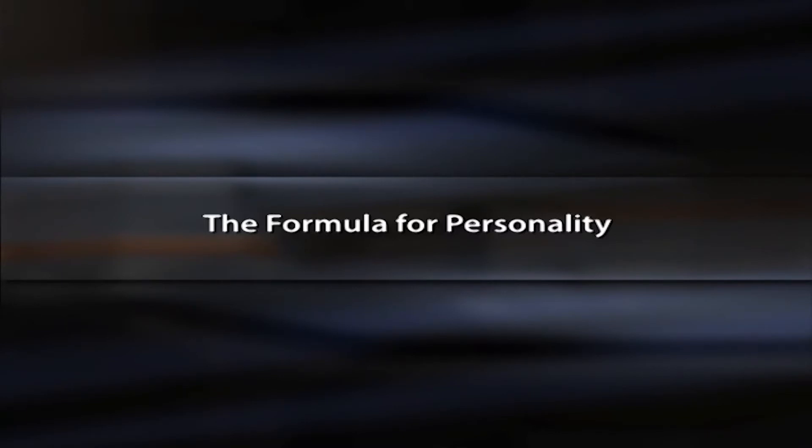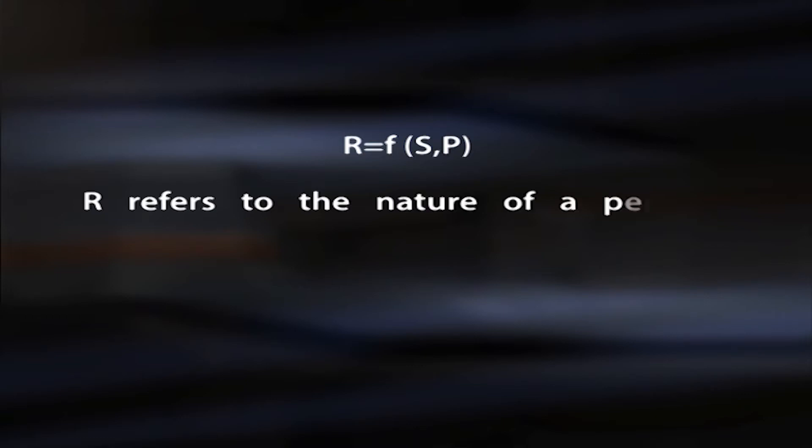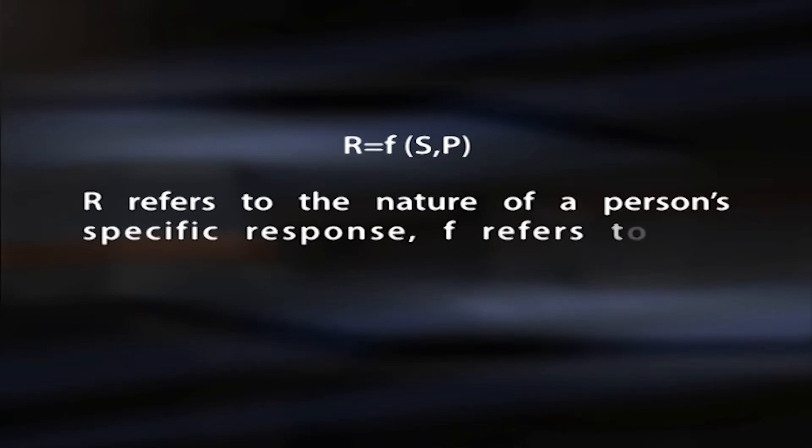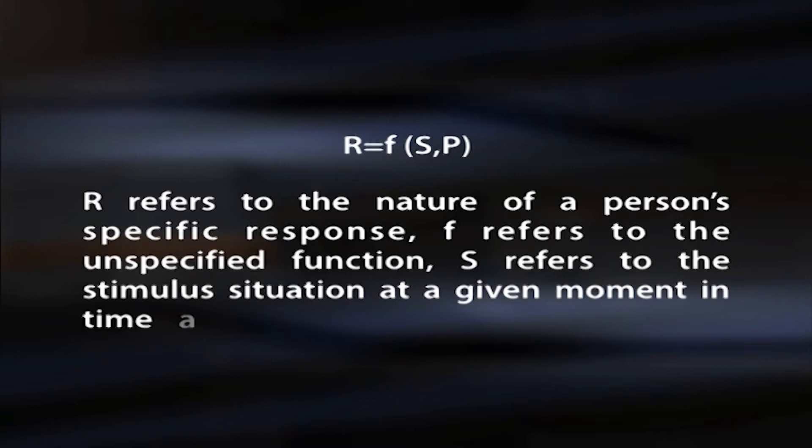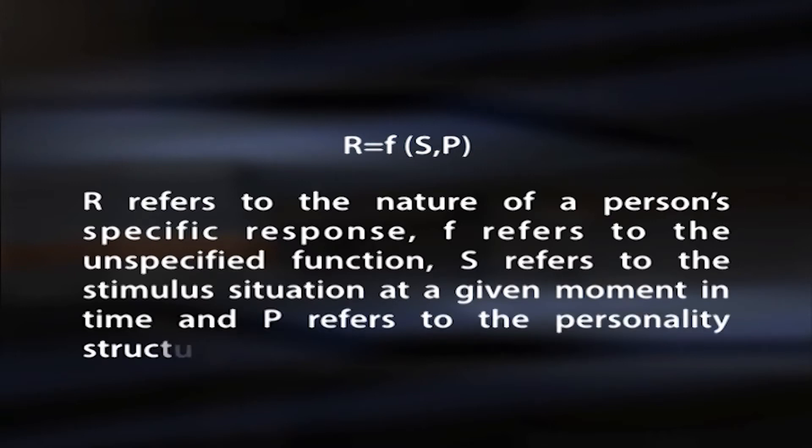Multivariate statistics and factor analysis are his preferred methods of personality study. According to Cattell, with the help of mathematical analysis of personality, the prediction of behavior can be made by a specification equation. The formula used to predict behavior is: R = F(S, P), where R refers to the nature of a person's specific response, F refers to the unspecified function, S refers to the stimulus situation at a given moment in time, and P refers to the personality structure.